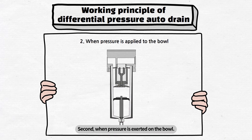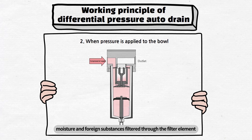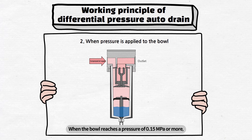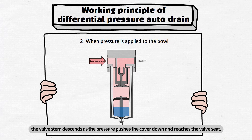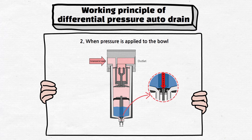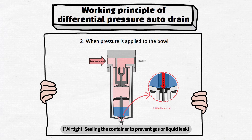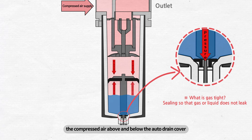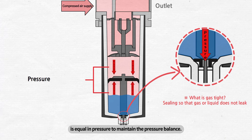Second, when pressure is exerted on the bowl: when compressed air enters the inlet, moisture and foreign substances filtered through the filter element pass through the rubber cover and accumulate at the bottom of the bowl. When the bowl reaches a pressure of 0.15 MPa or more, the valve stem descends as the pressure pushes the cover down and reaches the valve seat, keeping the bowl airtight — meaning the container is sealed to prevent gas or liquid leakage. In this state, the compressed air above and below the auto drain cover is equal in pressure to maintain the pressure balance.